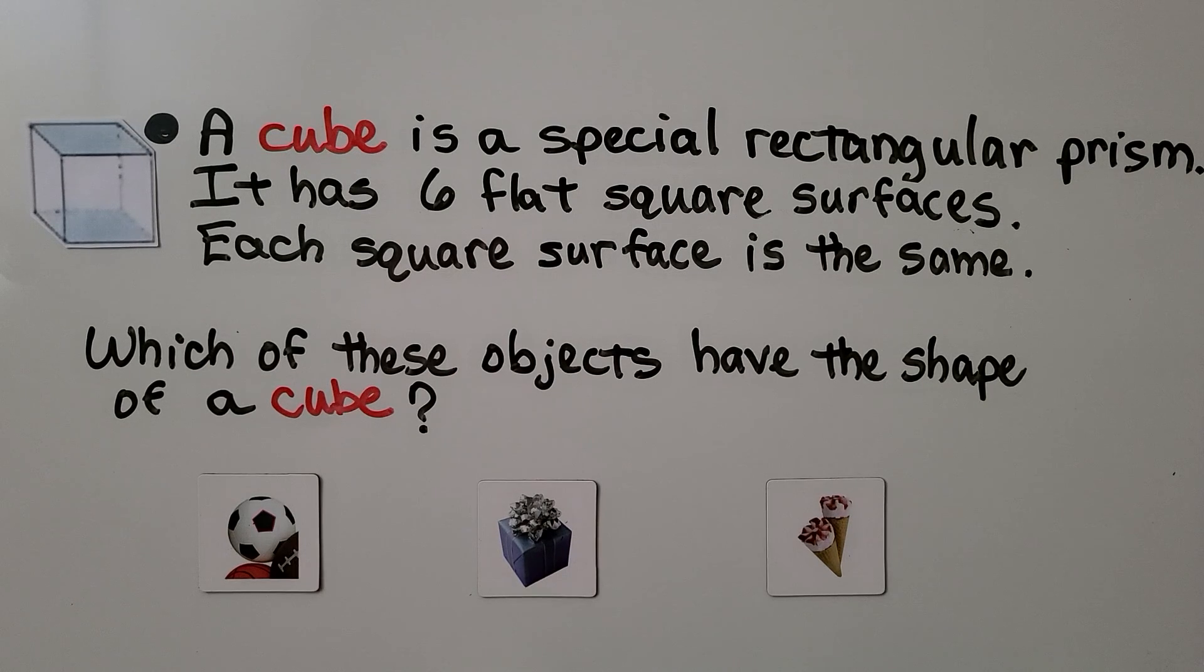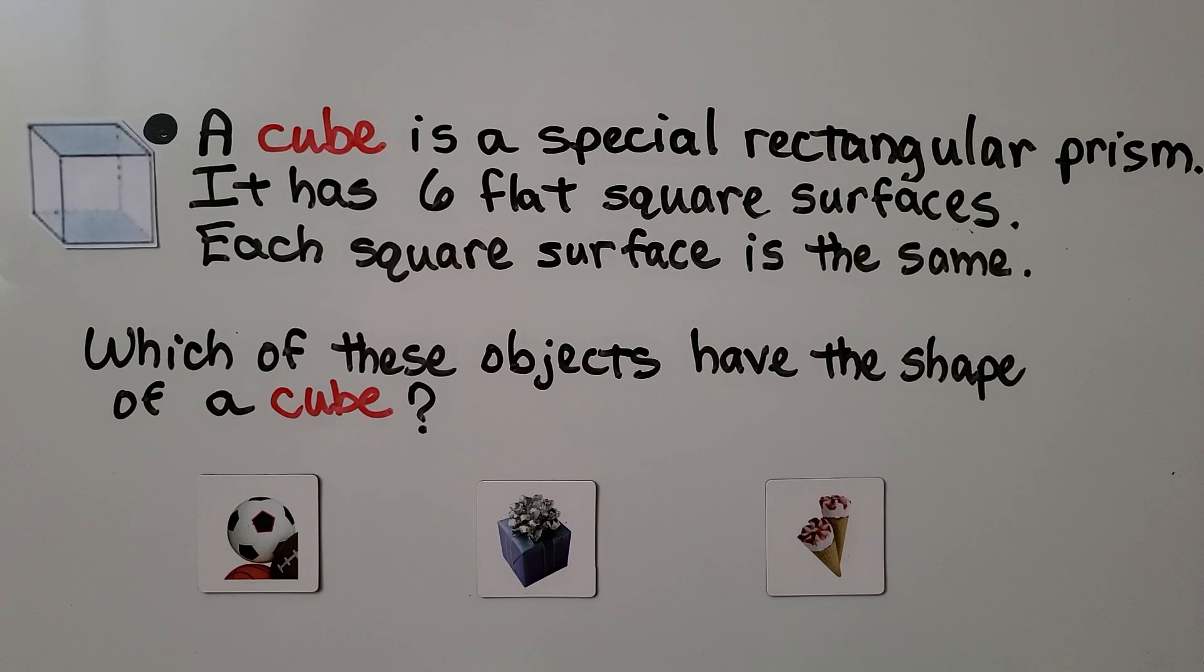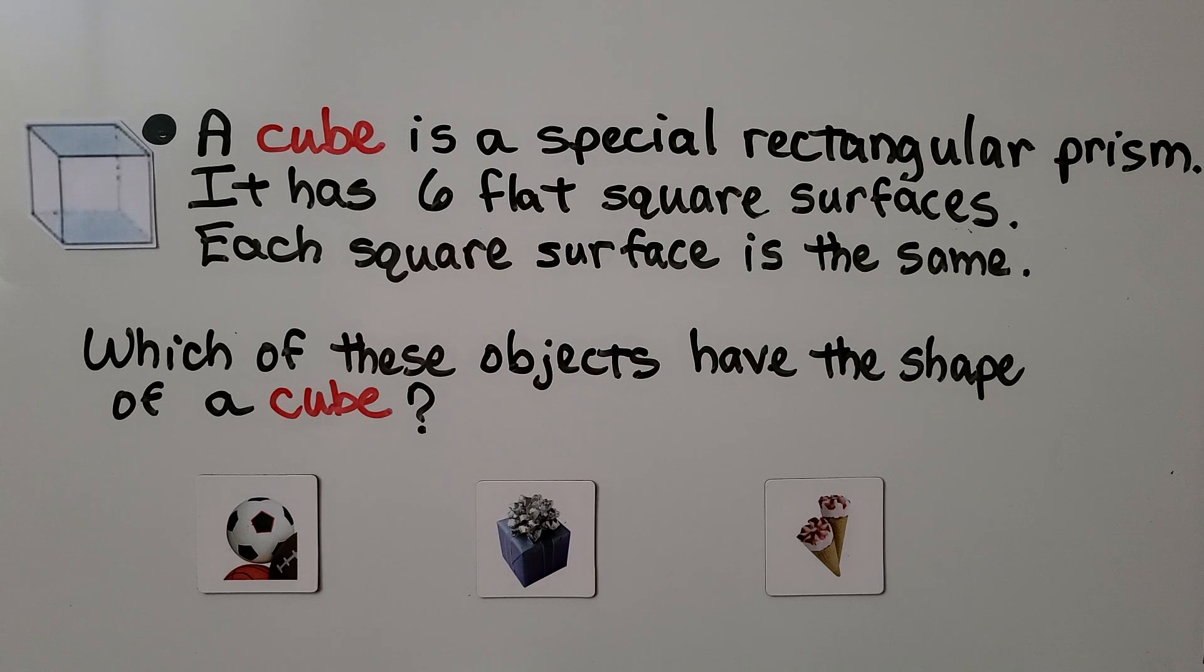A cube is a special rectangular prism. It has six flat square surfaces. Each square surface is the same. Which of these objects have the shape of a cube?